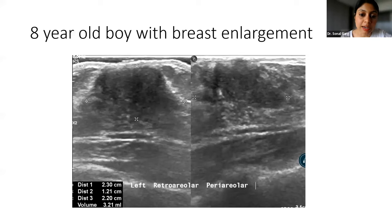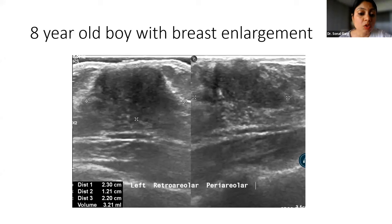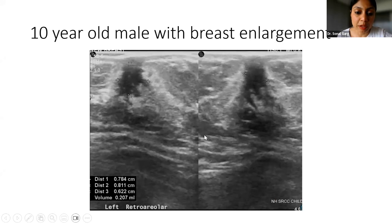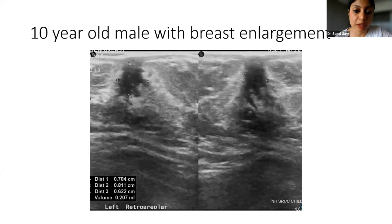There is a nodular type, a dendritic type, and a diffuse glandular type. I will show you what that looks like on ultrasound. This is an eight-year-old boy with breast enlargement — eight years is not the normal age for pubertal development in boys. This is a nodular pattern of gynecomastia where you can see a well-defined hypoechoic nodule. Similarly, this is a 10-year-old male with breast enlargement — again a very well-defined hypoechoic nodule.